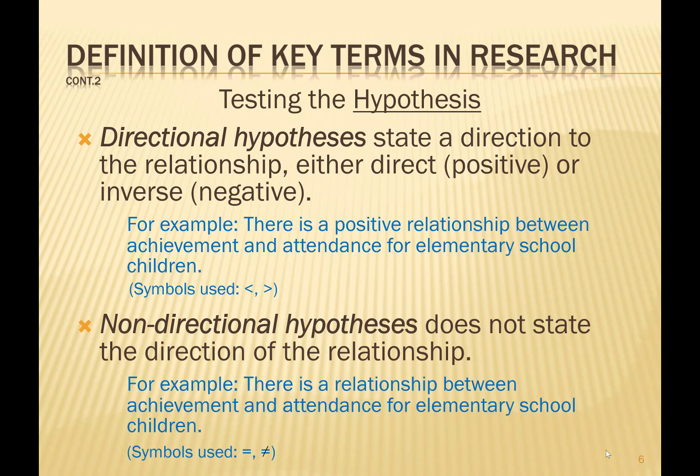There are two types of hypotheses: directional and non-directional. A directional hypothesis suggests a direction, whether we're talking about a relationship or difference. In the case of a relationship, a directional hypothesis would assert that the hypothesis is either positive or negative. In the case of the difference of means, directional would suggest that one is greater than or less than, using the greater than and less than symbols.